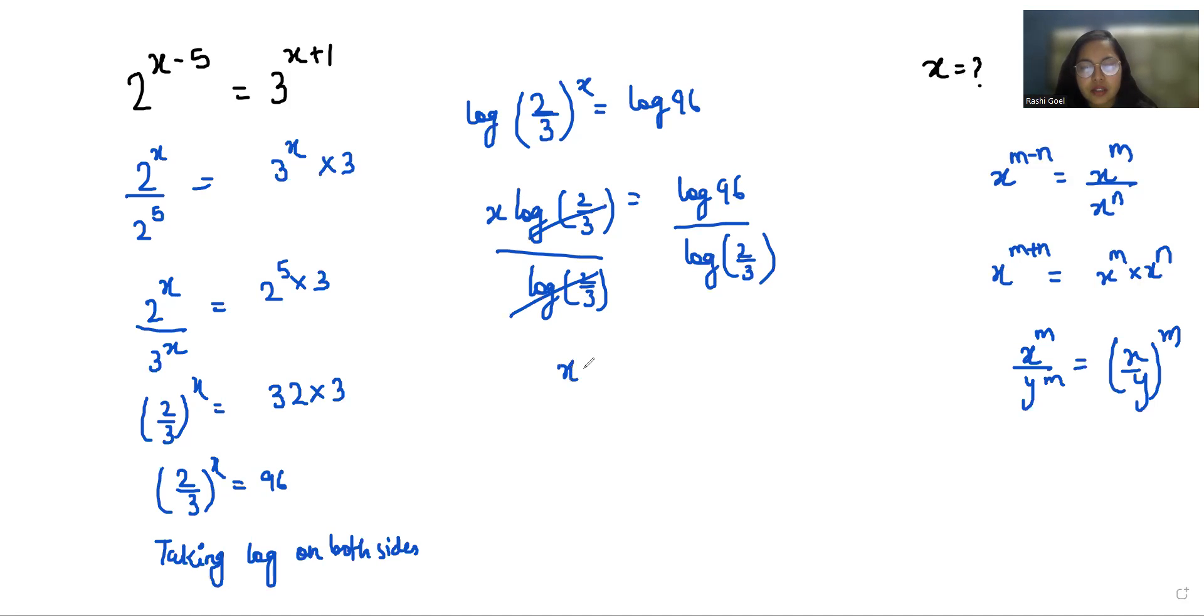So x equals log 96 / log(2/3). Since log(a/b) equals log a - log b, it becomes log 96 / (log 2 - log 3). This is the value of x.